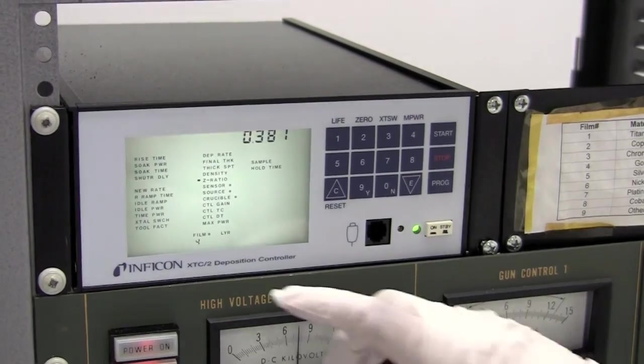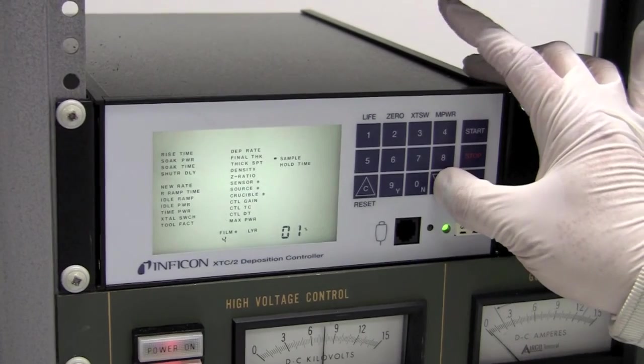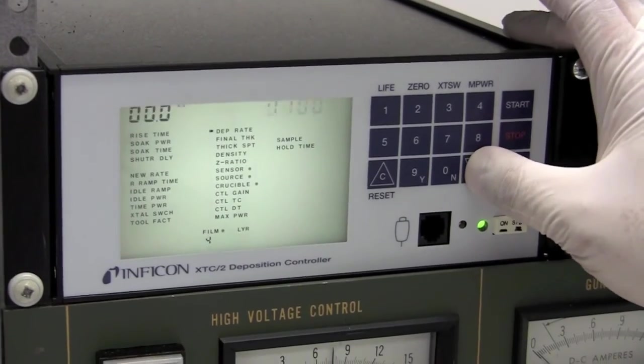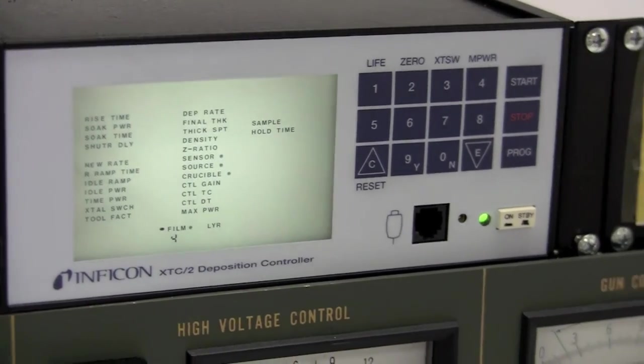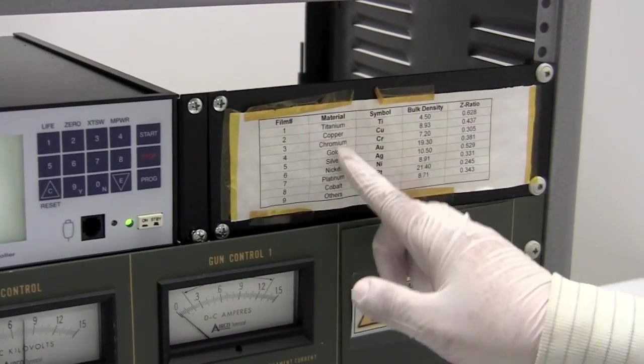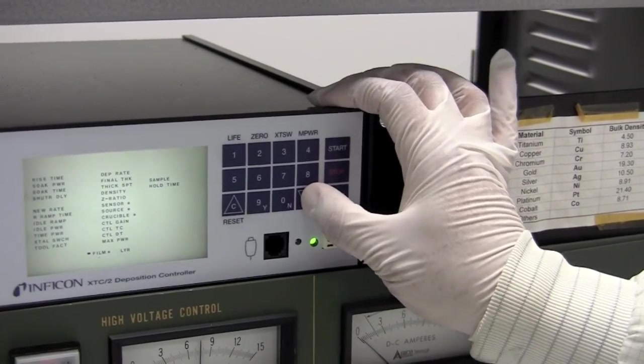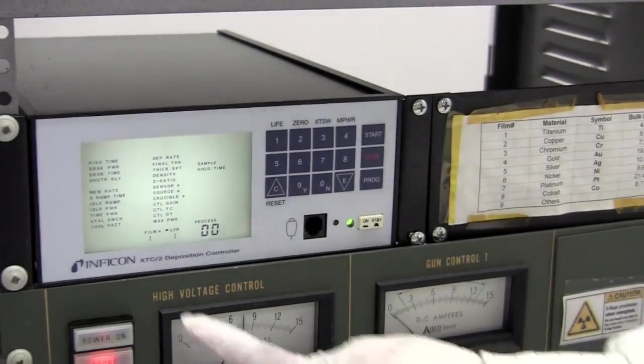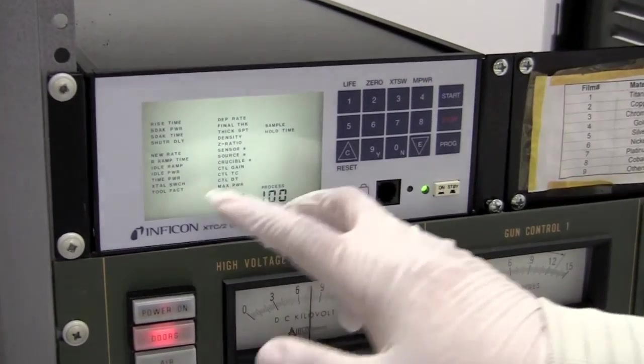So the only two things you change in the program are the film number and then level. So we go down all the way. You would put one. If you were trying to do copper, you would put two and so on. So the film number one is titanium. And then the next thing we change is the first layer. We only have one layer at a time, but we put one here. So those are two things you change, these two numbers, the film number and then the first layer.